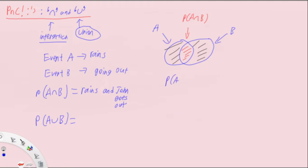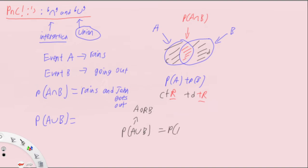For union, it's the whole Venn diagram. But because there is this intersection in the center, it is not simply P(A) plus P(B). If we label the non-overlapping part of A as C, the non-overlapping part of B as D, and the intersection as R, then P(A) = C + R and P(B) = D + R. We've double-counted R, so for P(A union B) we need to subtract the intersection: P(A∪B) = P(A) + P(B) - P(A∩B).